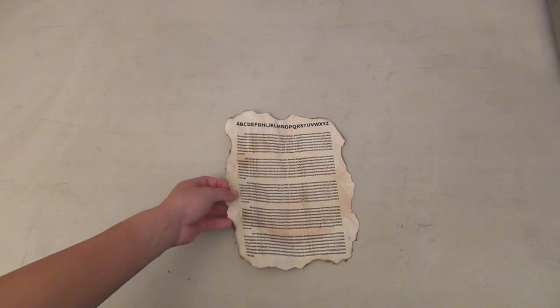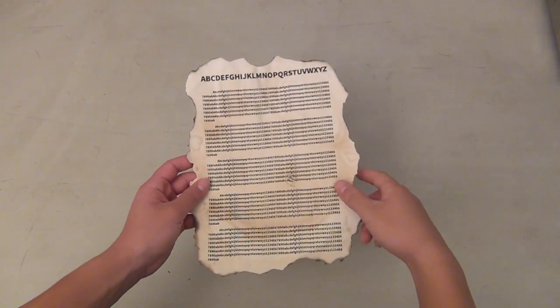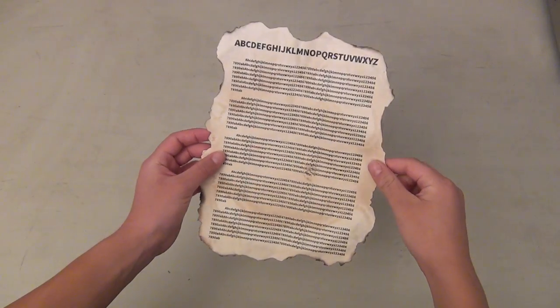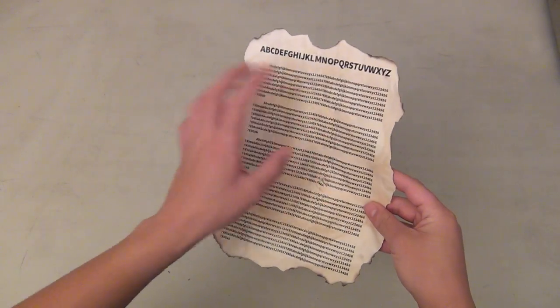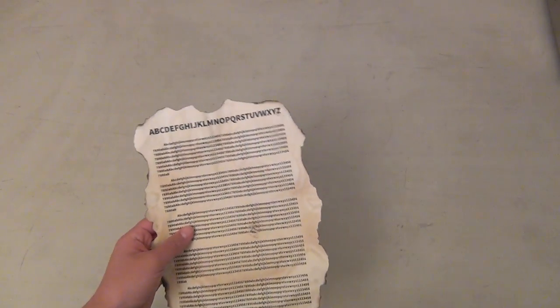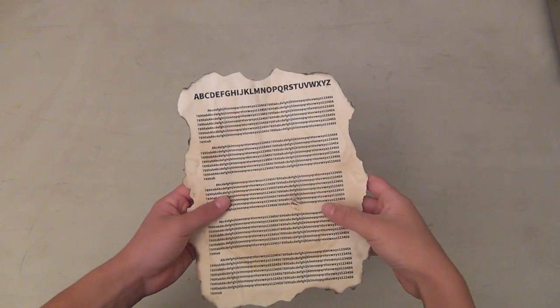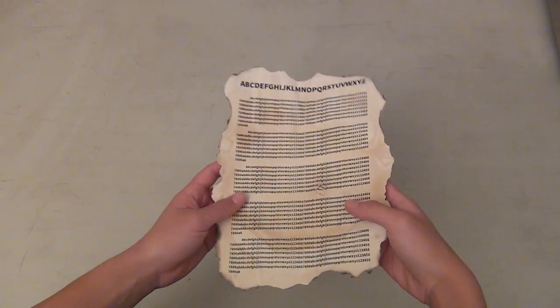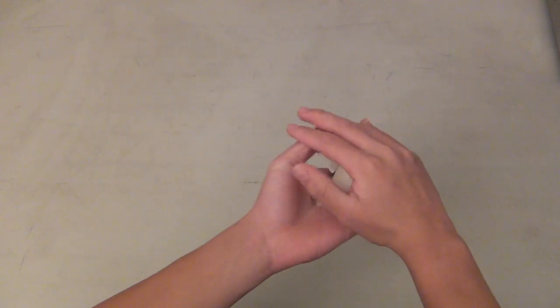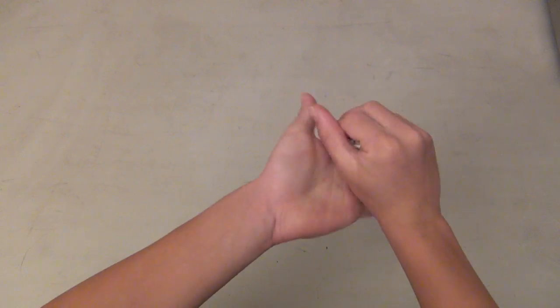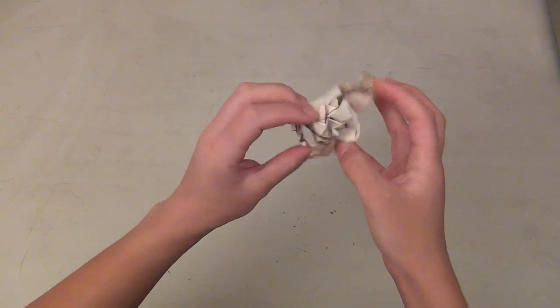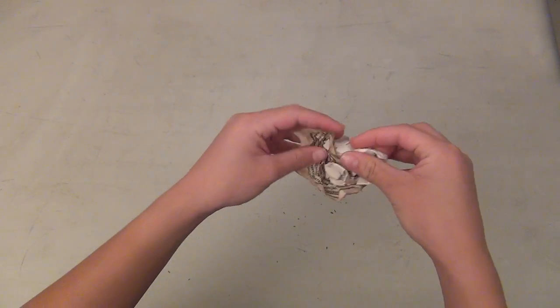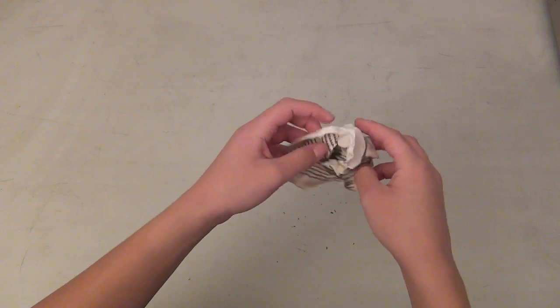Alright, so now we're down to the last part of making the paper look old. So we've soaked it in coffee, we've dried it out in the microwave, and we've burned down the edges a little bit. So the last step is to crumple it up. To do that, actually this step is pretty easy to just crumple it up. But while you're crumpling up, just be careful not to rip it.